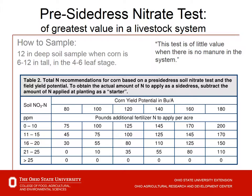One other potential test here in Ohio is the pre-sidedress nitrate test, or PSNT. We collect soil, send it to the lab, and do a nitrate test, as we can for phosphorus, potassium, and pH. The sampling method is to take a 12-inch deep sample when the corn is 6 to 12 inches tall at the 4 to 6 leaf stage. The goal is to get an estimate of how much nitrate is available right before making that side-dress nitrogen application, then reduce the recommendation based on that result.